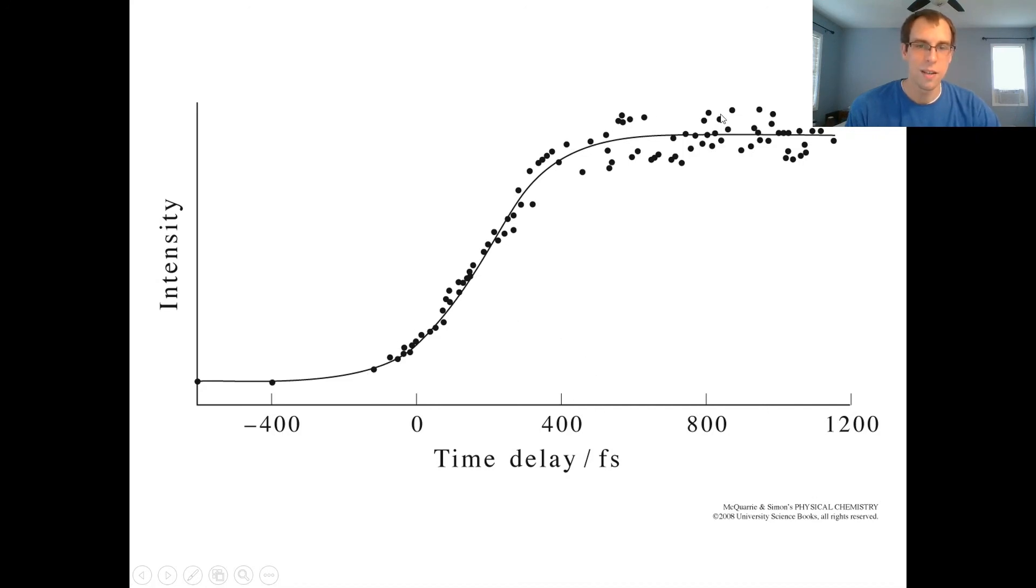Then as we increase the time delay, we see this behavior that tells us how quickly. Around 400 femtoseconds or so, most of the cyanide has already been generated. That's sort of the length of time it takes for this ICN molecule to fall apart after it absorbs light.